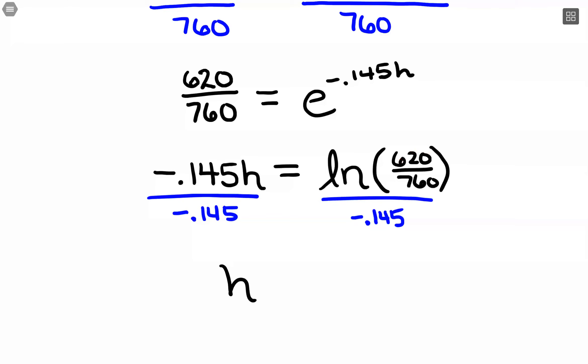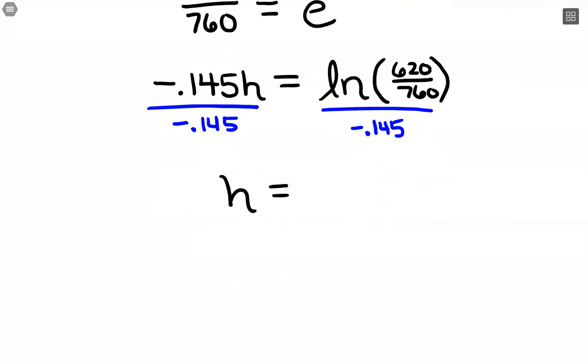So for an exact value, h is this natural log of 620 over 760 over negative 0.145. But if we needed to make a sentence here, that doesn't make much sense. So let's go to our calculator.